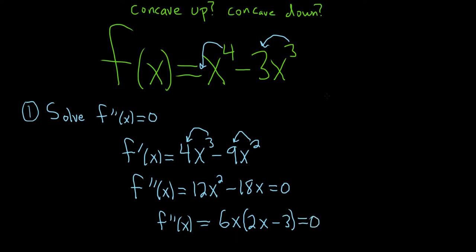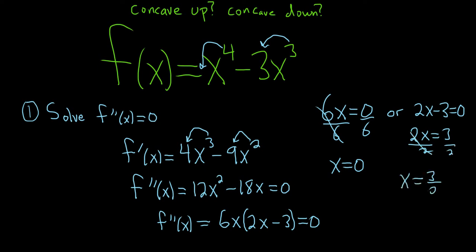We have a product equal to 0, so we can set each factor equal to 0. So 6x equals 0, or 2x minus 3 equals 0. Divide by 6, so it's going to give us x equals 0. So this doesn't really have a name, this number. It's kind of like a critical number, but it's not. Critical numbers come from the first derivative. These are coming from the second derivative. We can add a 3, so 2x equals 3, and then divide by 2. So we have two possible points of interest. These are places where the concavity might change.